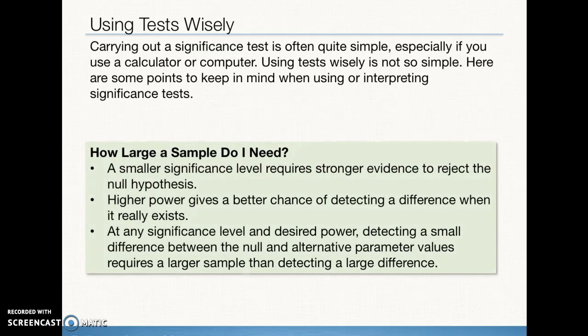So how large a sample do I need? We know that a smaller significance level, for example, a 0.01 instead of a 0.05, requires stronger evidence or more extreme sample statistic value to reject the null hypothesis. Higher power, remember power that we talked about, as the ability of the test to correctly reject a false null hypothesis. Higher power gives a better chance of detecting a difference when it really exists, like in the potato chip example.